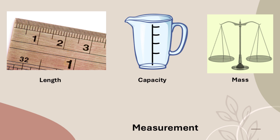Since different people have different body part sizes, hand span, foot span, and cubit are non-standard units of measurement because they differ from person to person. There was a need for a standard unit, and the standard unit of measuring length is the meter. For measuring small lengths we use centimeters, for longer lengths we use meters, and distance between places is measured in kilometers. Lengths are measured using measuring tapes, measuring rods, rulers, etc.